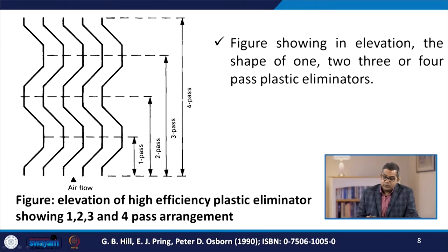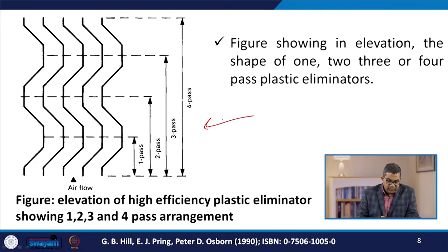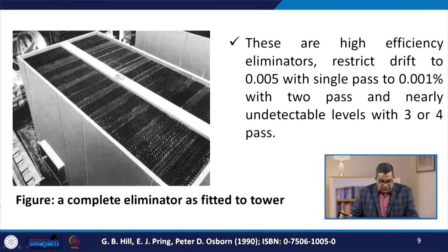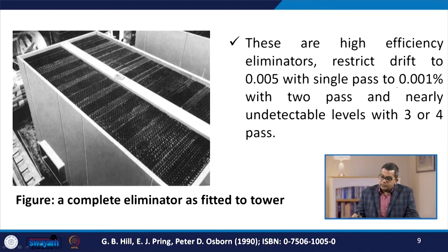This figure shows in elevation the shape of 1, 2, 3, or 4 pass plastic eliminators. These eliminators are highly efficient — they restrict drift to 0.005% with a single pass, 0.001% with 2 pass, and nearly undetectable levels with a 3 to 4 pass configuration.